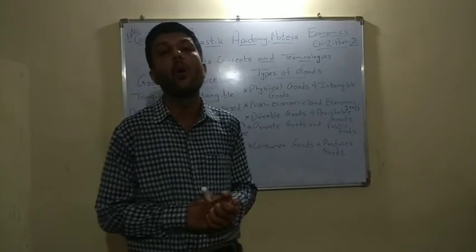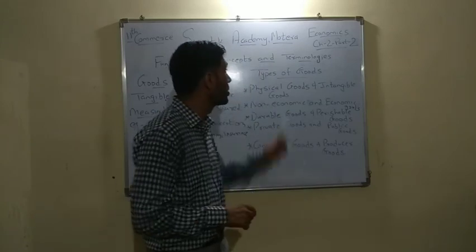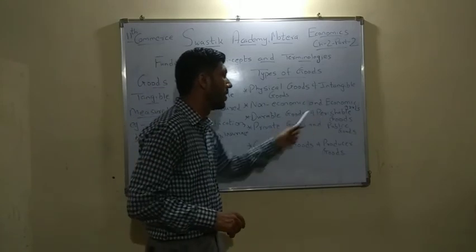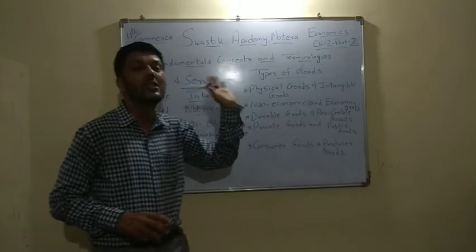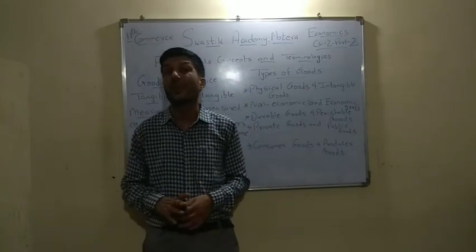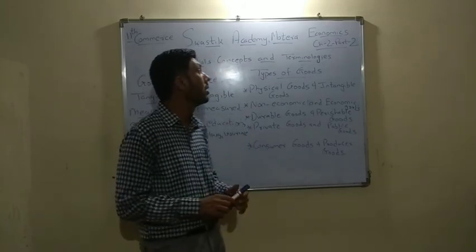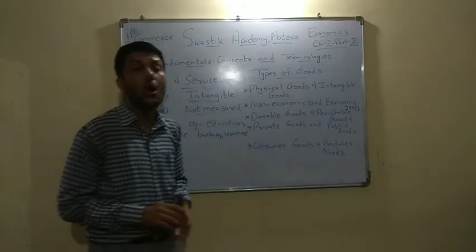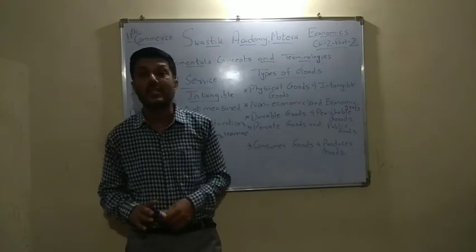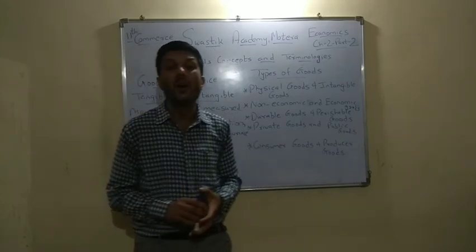Toh yahan tak yeh aapko topic samajh aa gaya hoga — goods and services, tarah tarah ki goods: physical goods, intangible, non-economic, economic, durable, perishable, private goods, public goods, consumer goods, and producer goods. Toh aap is topic ko revise karein. Iske pehle humne kiya tha price and value — price and value bhi aapko samajh aa gaya hoga. All types of goods and services aur yeh bhi samajhne ki aap koshish kariye. Aage doosra topic hum dekhenge, same chapter mein, Part 3 mein — aur aap isko revise karein badhiya tariqe se.